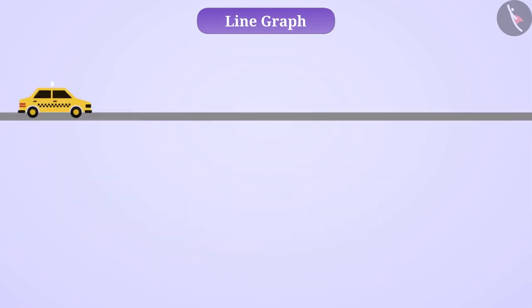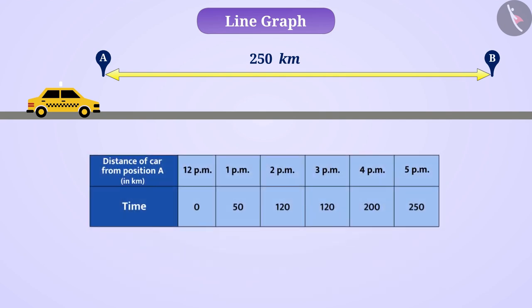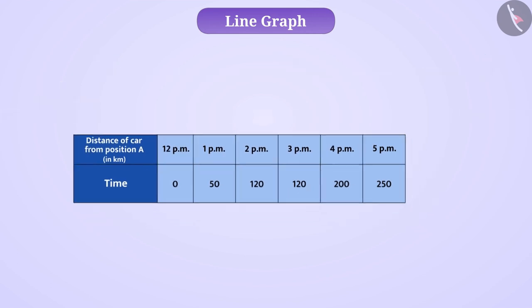Let us learn to draw a line graph with an example. A car travels 250 kilometers from its starting position A to position B. The distance of the car from place A at different times is shown in this table. Now, represent this data on the graph.